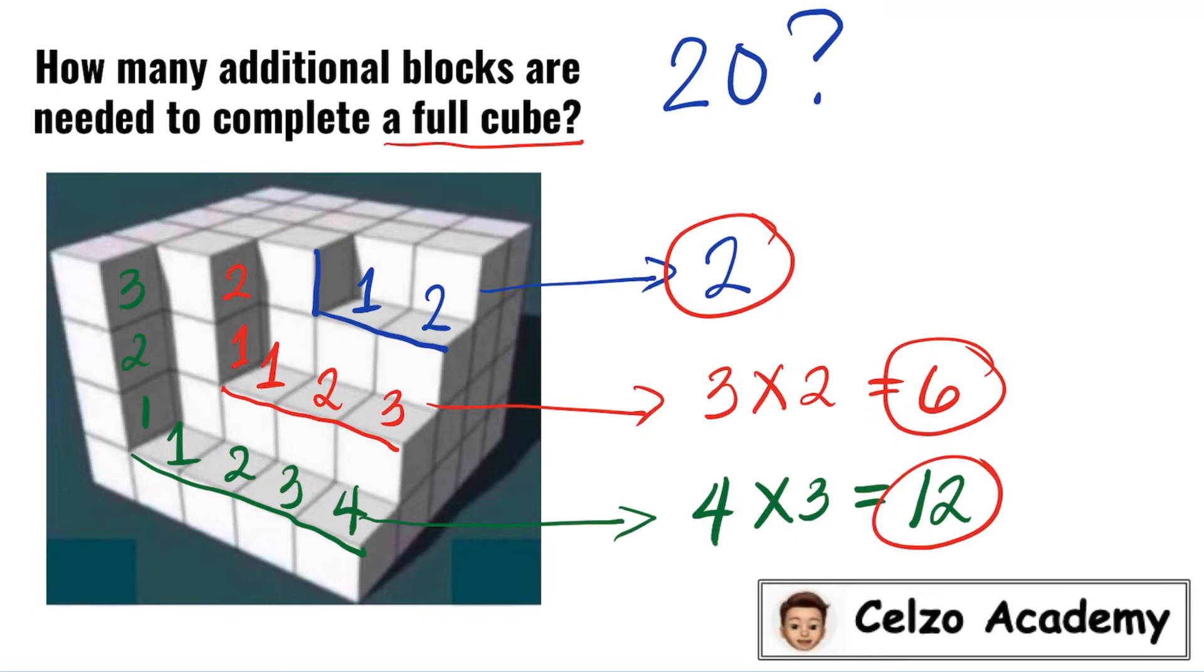We have determined that we need 20 cubes to fill in the blank spaces. But that's not enough to meet the requirements of the puzzle. To create a new 5x5 layer, we need to add 25 blocks because we need to do 5 times 5 which is 25.